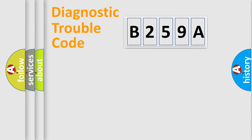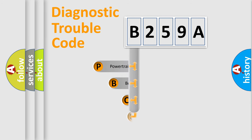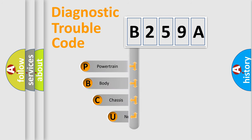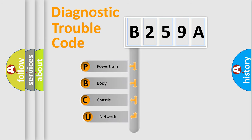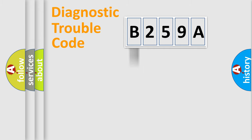Let's look at the history of diagnostic fault code composition according to the OBD2 protocol, which is unified for all automakers since 2000. We divide the electric system of an automobile into four basic units: Powertrain, Body, Chassis, and Network.